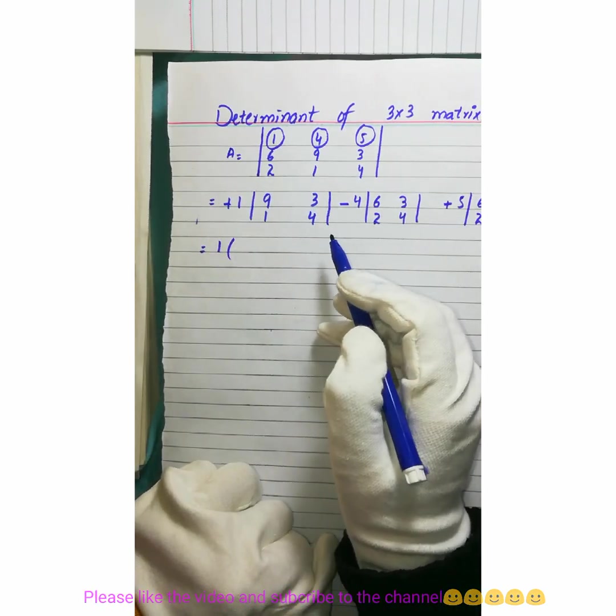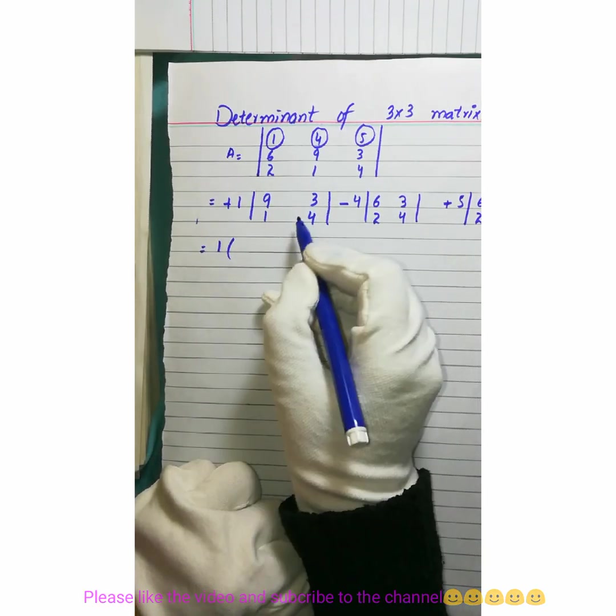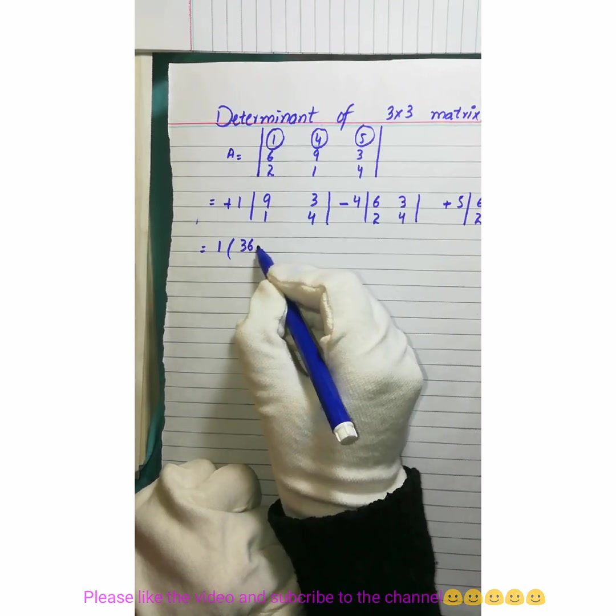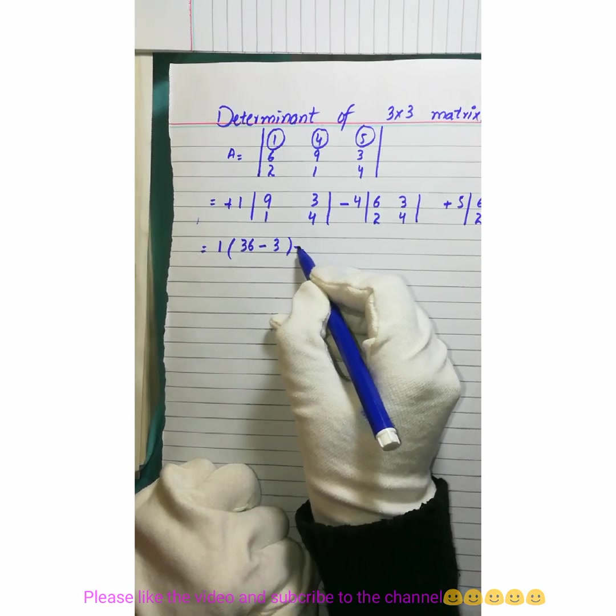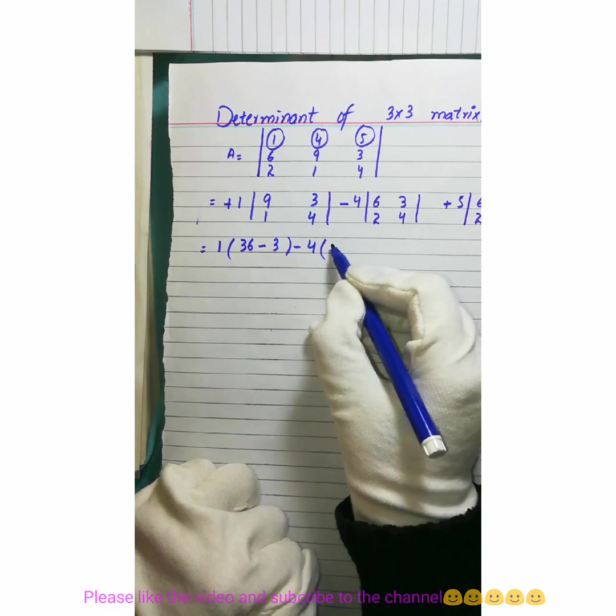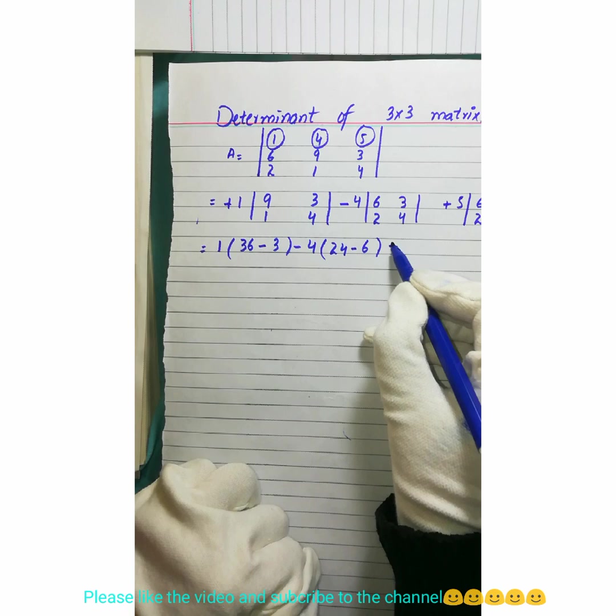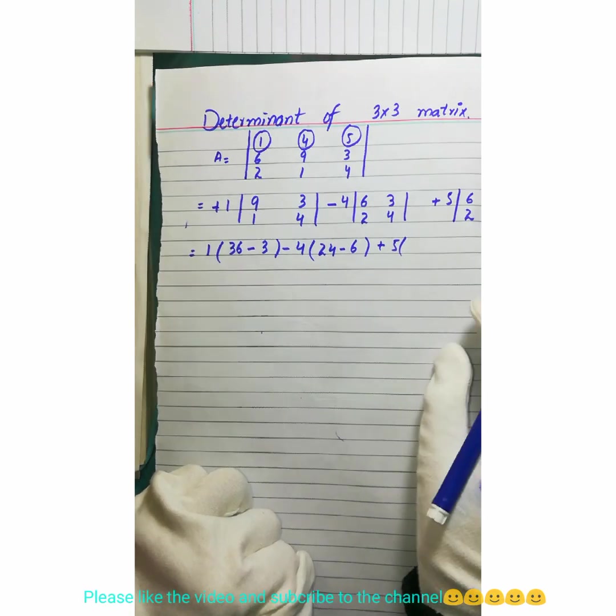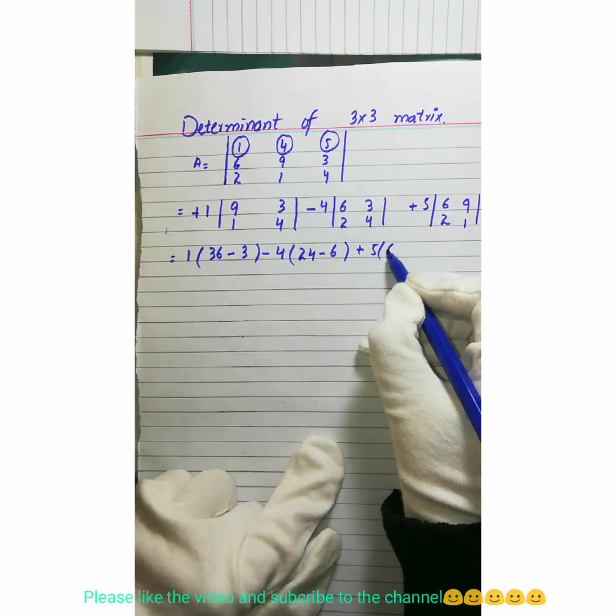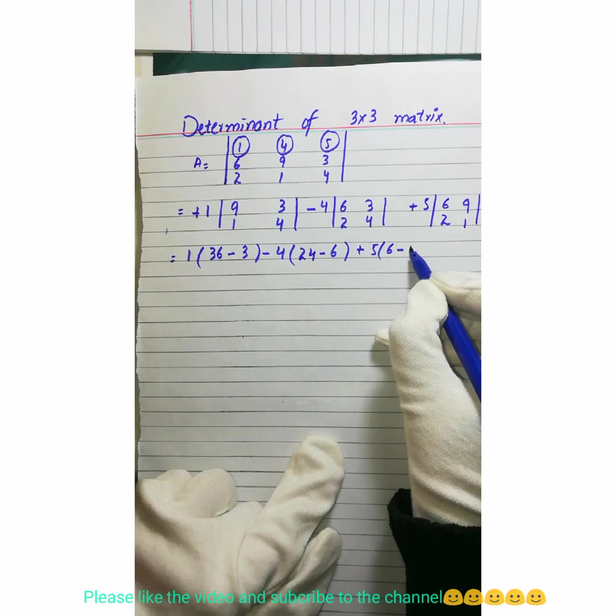So, 9 times 4 is 36 minus 3. Minus 4 into 6 is 24 minus 6. Plus 5 into... 6 minus 9... to the 18.